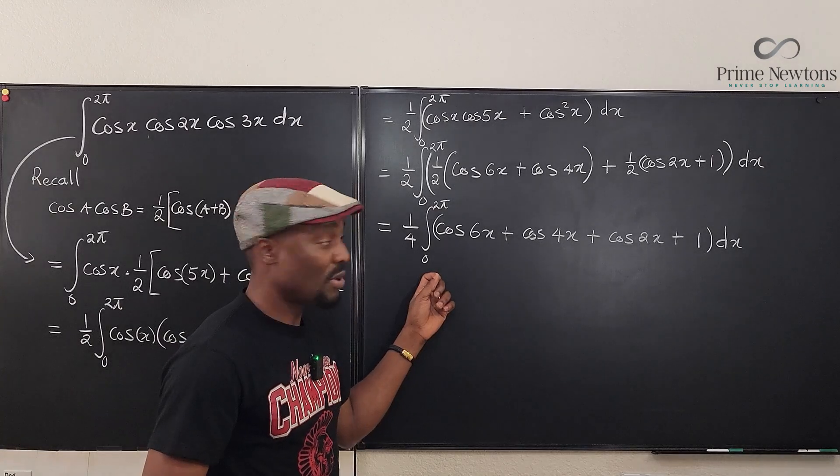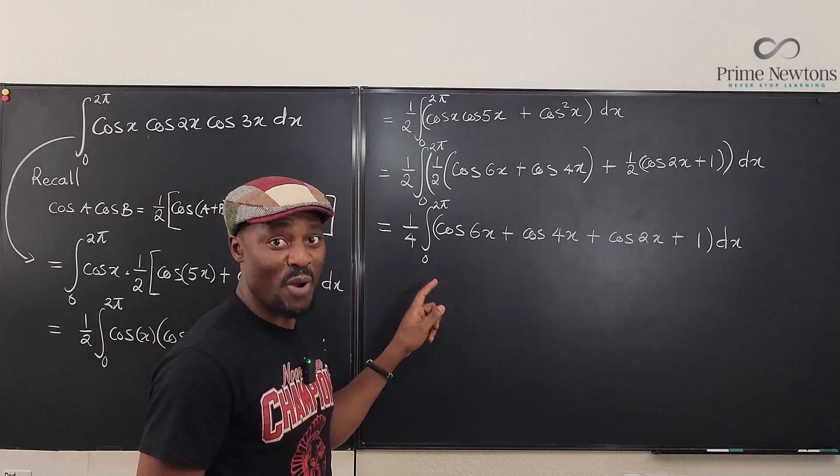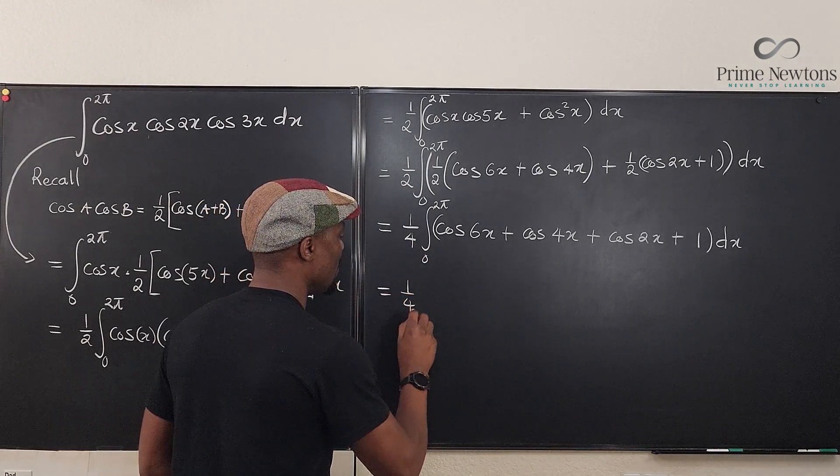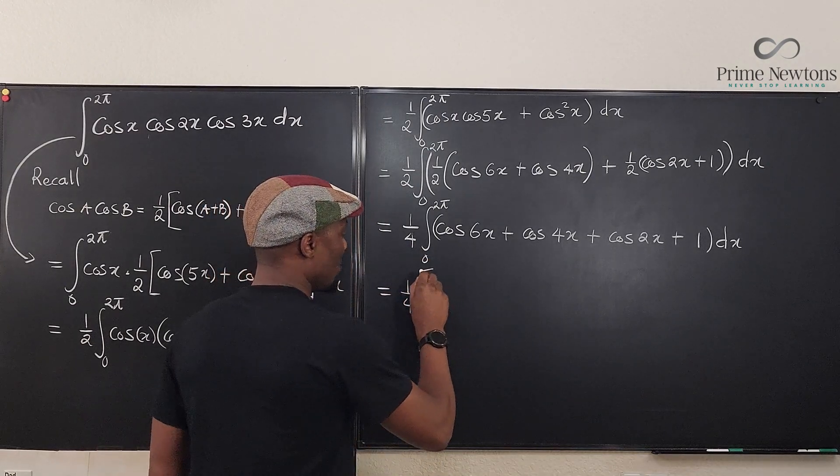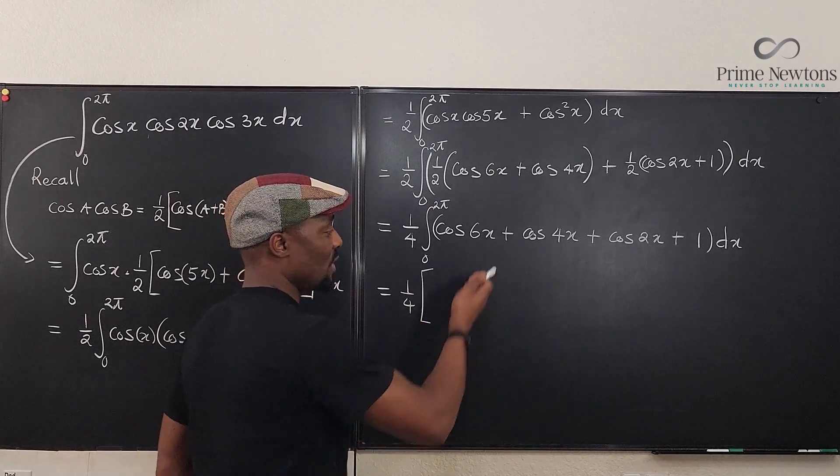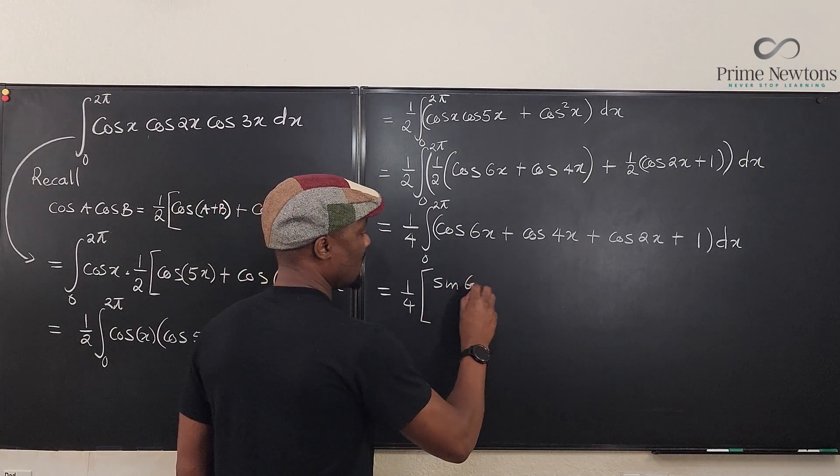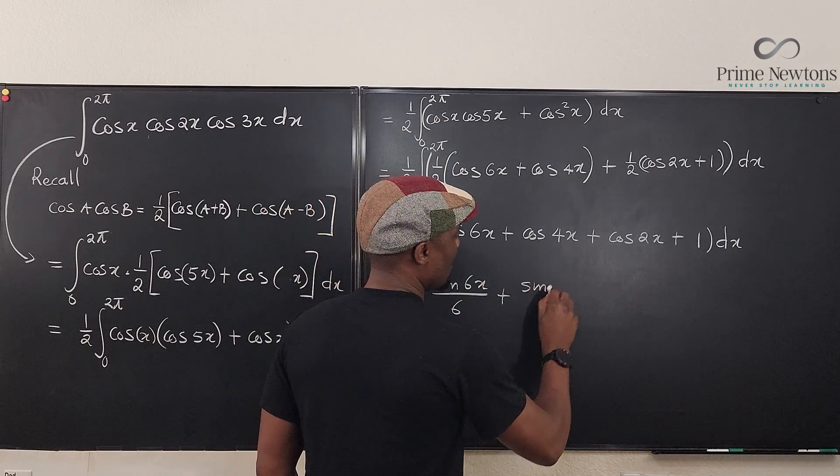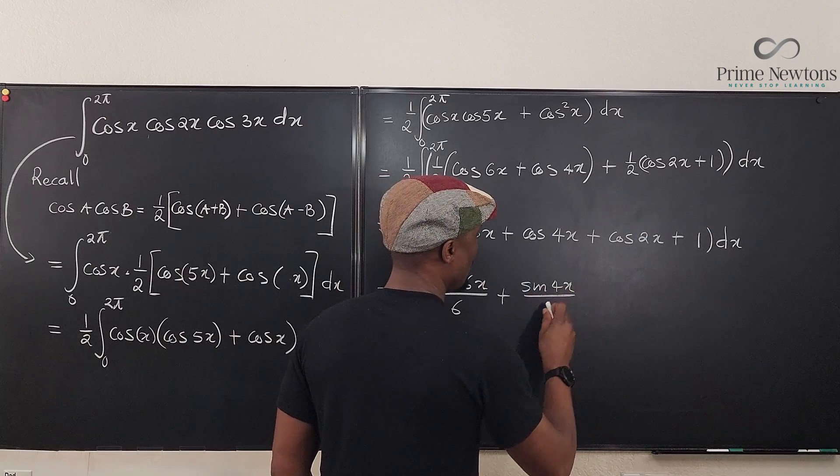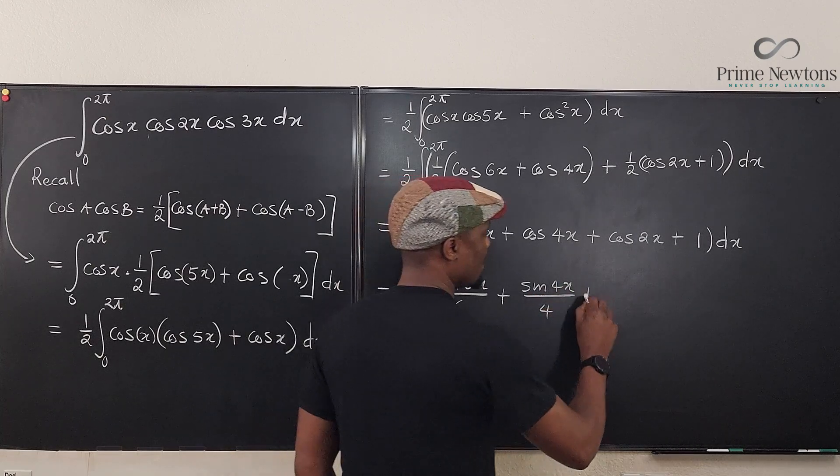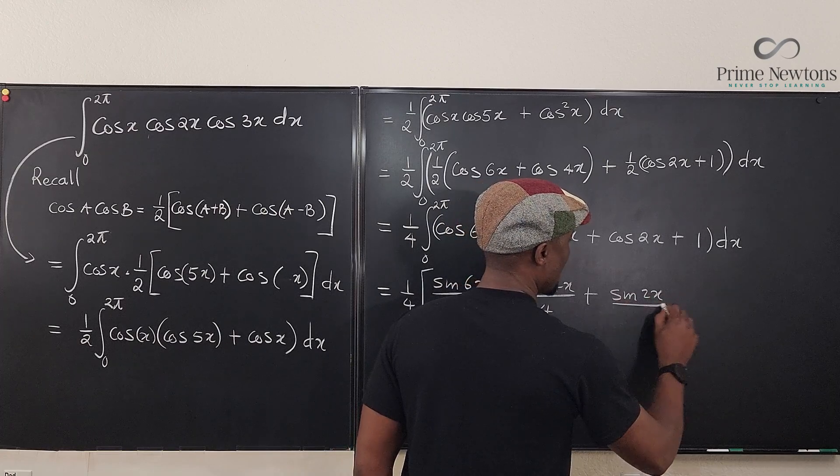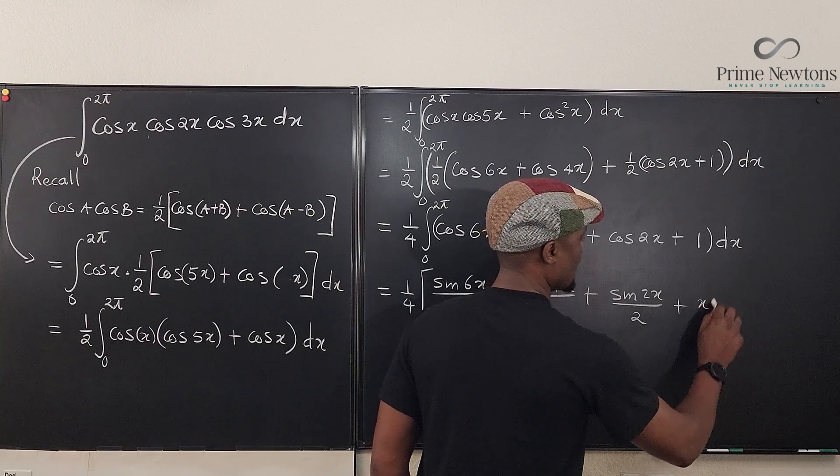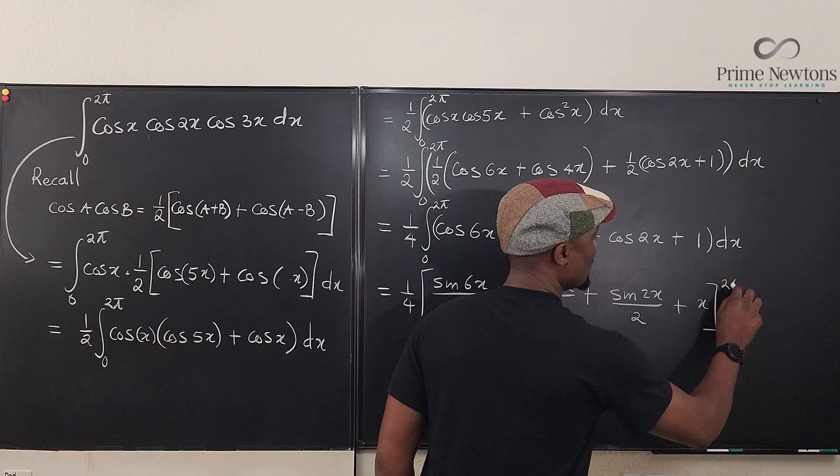So I put all the boundaries for this problem because the original question required that it went from 0 to 2 pi. So let's see what we get here. This is going to be 1 over 4 times. We're now going to start integrating because we can integrate each of this. This is going to be sine 6x over 6 plus sine 4x over 4 plus sine 2x over 2 plus this is going to be just x evaluated from 0 to 2 pi.